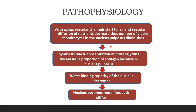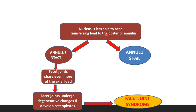The pathophysiology of disc degeneration: with aging, the vascular channels start to fail and vascular diffusion of nutrients decreases to the nucleus pulposus. This results in decreased concentration of proteoglycans. As proteoglycans decrease, the water-binding capacity of the nucleus pulposus decreases and the nucleus becomes more fibrous and stiffer. When the nucleus becomes stiffer it is unable to transfer weight to the posterior annulus, and if the annulus remains intact, this can produce facet joint arthritis.